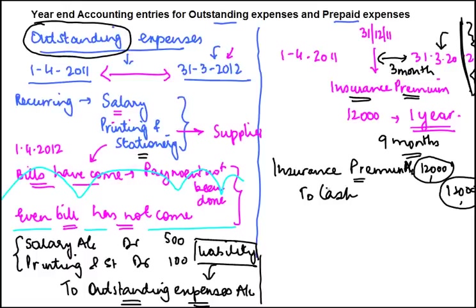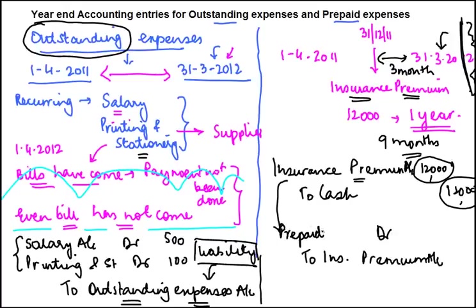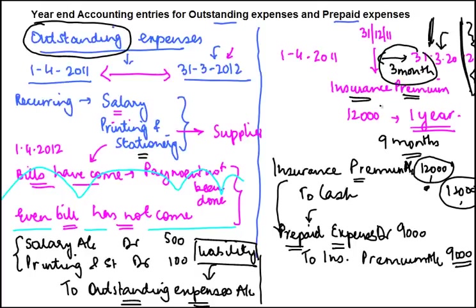Only three months of benefit out of this 12,000 has been available during the year. So instead we credit 9,000 to the insurance premium account and debit prepaid expenses by 9,000. Prepaid means, as on the date of preparing the balance sheet, this amount has been paid in advance — the nine months' worth, which is 9,000.